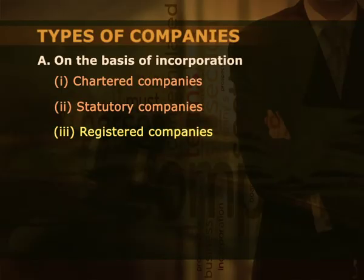Second, statutory companies. A company may be incorporated by means of a special act of the Parliament or any state legislature. Such companies are called statutory companies. Instances in India are the Reserve Bank of India, the Life Insurance Corporation of India, and the Food Corporation of India. The provisions of the Companies Act 1956 apply to statutory companies except where inconsistent with the provisions of the act creating them. Third, registered companies. Companies registered under the Companies Act 1956 or earlier Companies Acts are called registered companies. Such companies come into existence when registered and a certificate of incorporation is granted to them by the registrar.